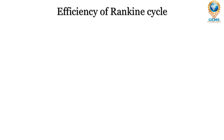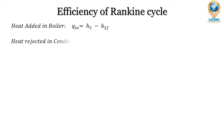Now we will calculate the efficiency of the Rankine cycle. Heat added in the boiler is Q1 equal to H3 minus H2F. Heat rejected in the condenser is equal to H4 minus H1F.